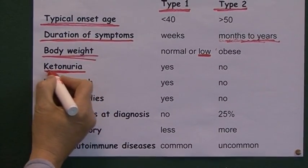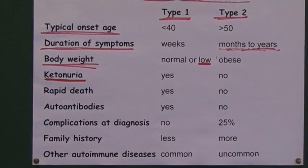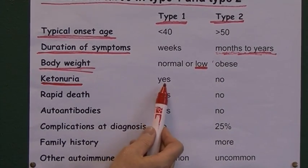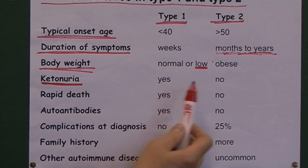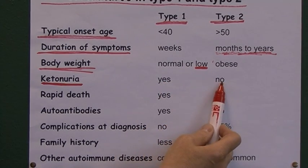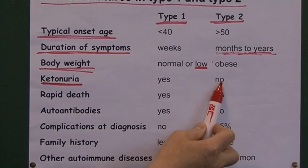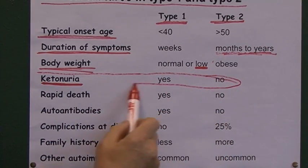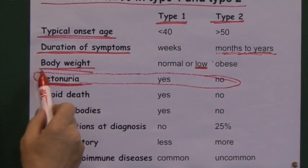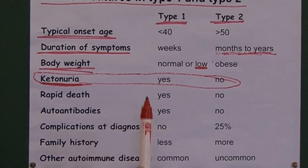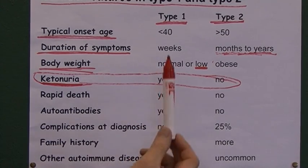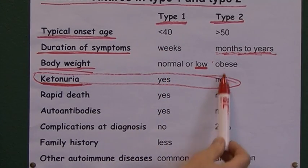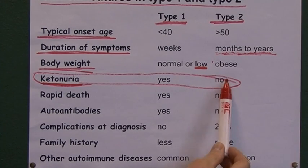Ketonuria — the presence of ketones in the urine — is symptomatic of ketones in the blood. In type 1 diabetes, you will get ketones; there will be a ketosis. In type 2, there will not be a ketosis. This is very useful for differentiating between the two types. When a patient presents, we test the urine for ketones: ketones present suggests type 1; no ketones suggests type 2 diabetes.